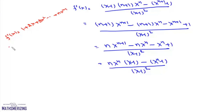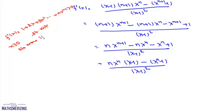When x is greater than or equal to 0, all terms of f'(x) = 1 + 2x + 3x² + ... + n·x^(n−1) are non-negative, so f'(x) is greater than 0. The function is strictly increasing for x ≥ 0, meaning no maxima or minima exist in that region. We restrict attention to x less than 0.